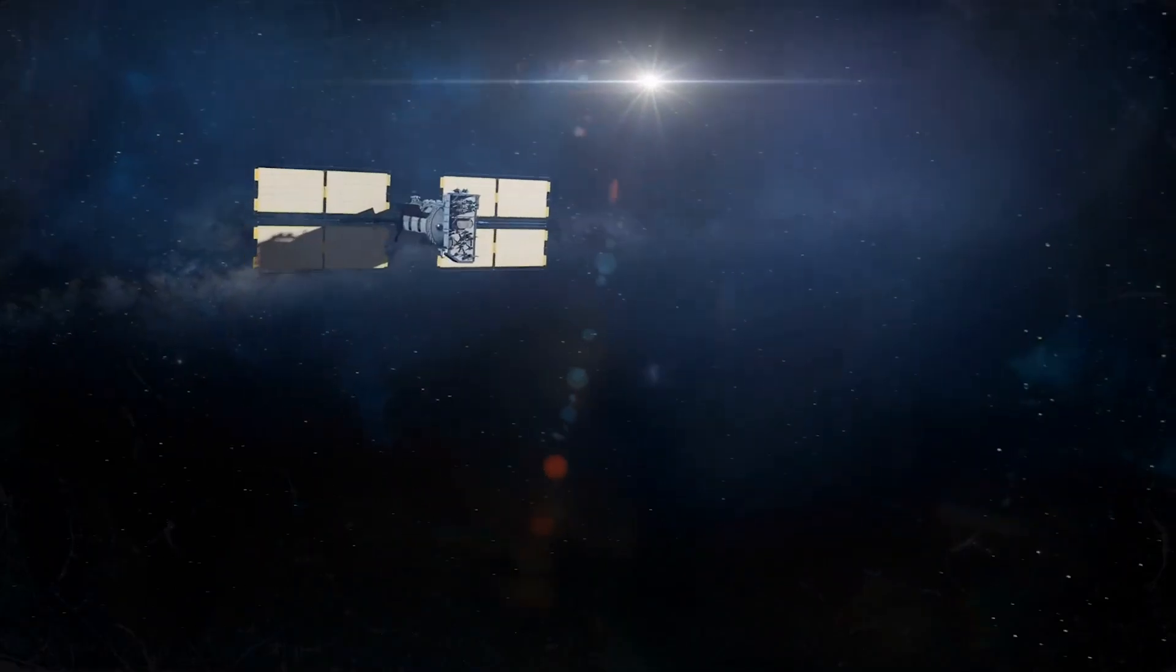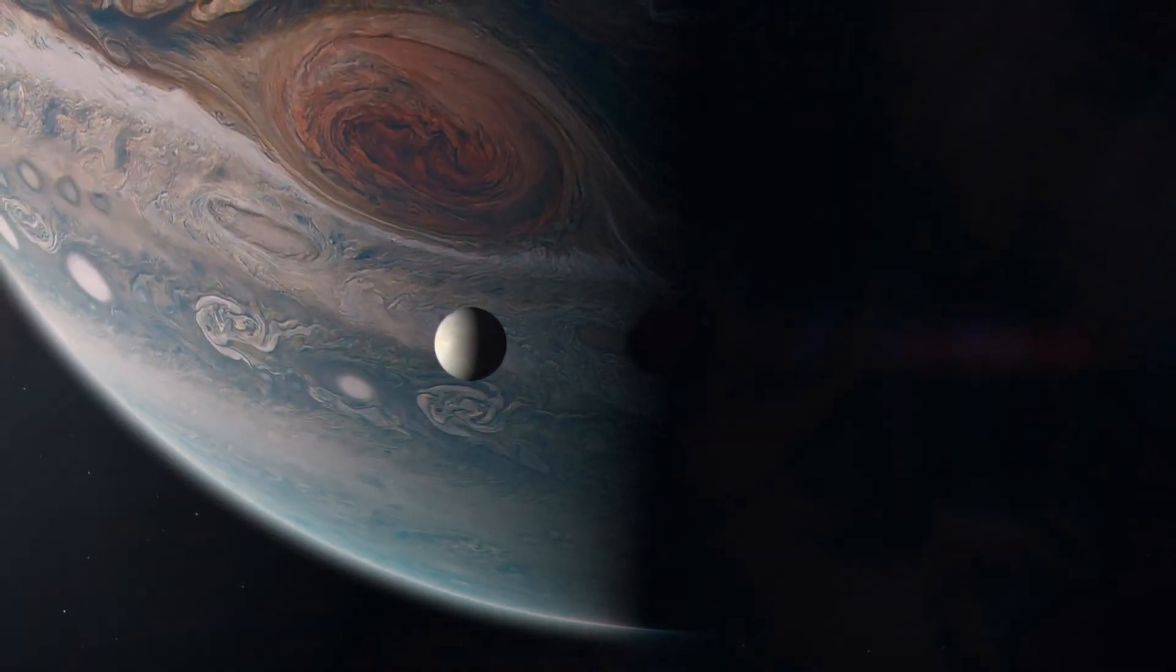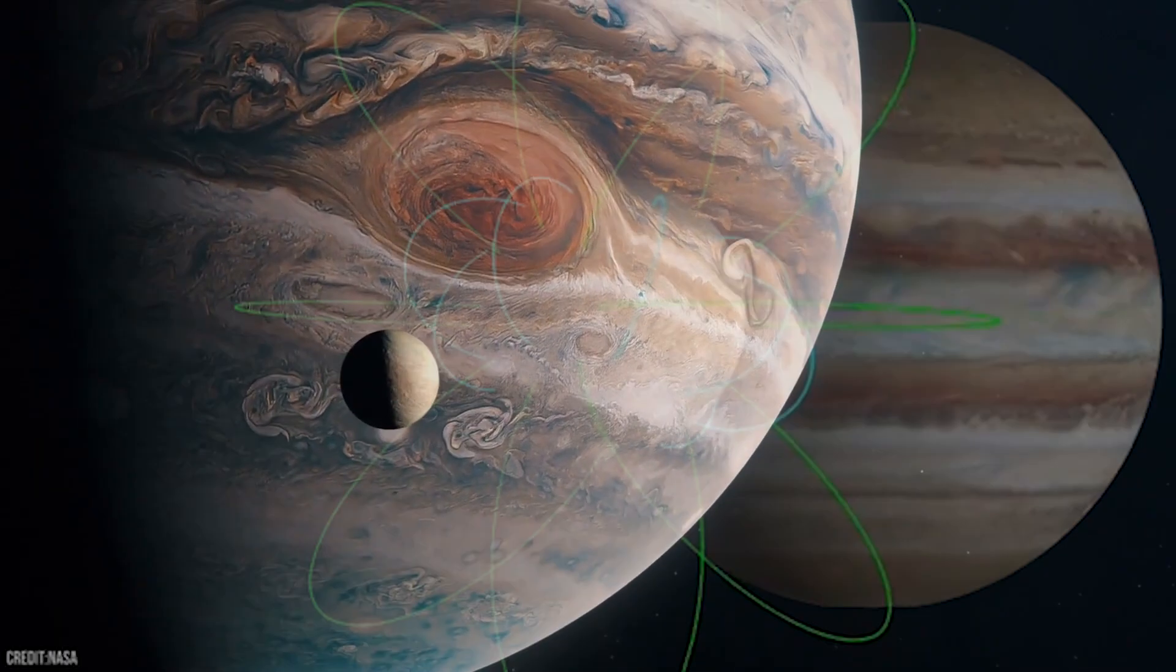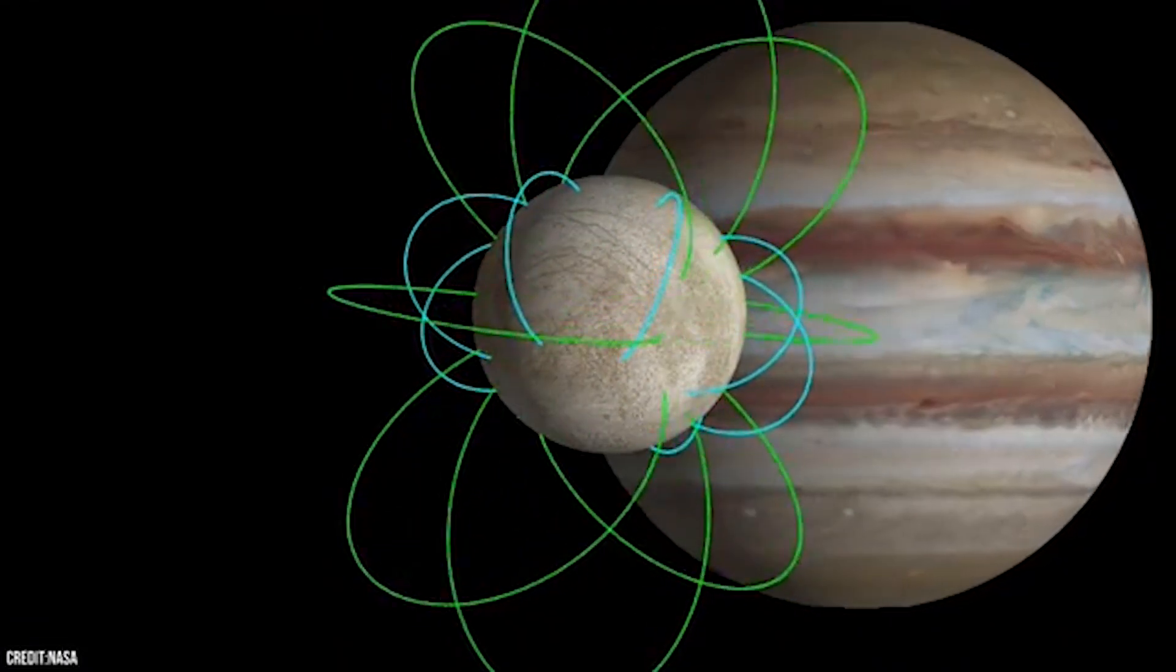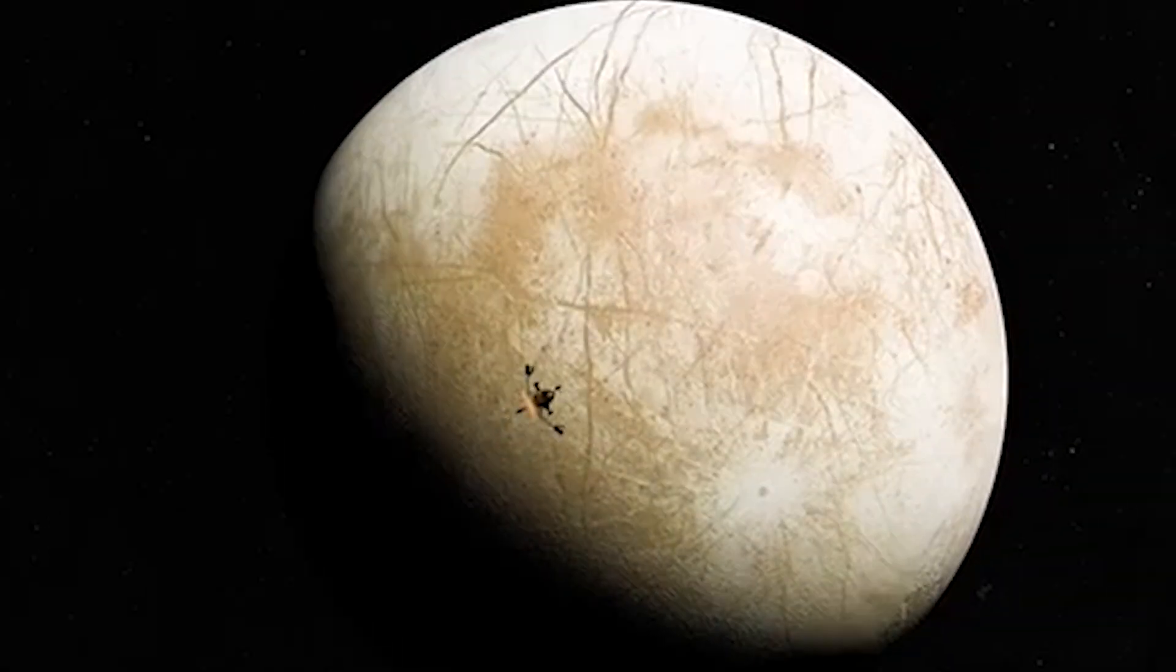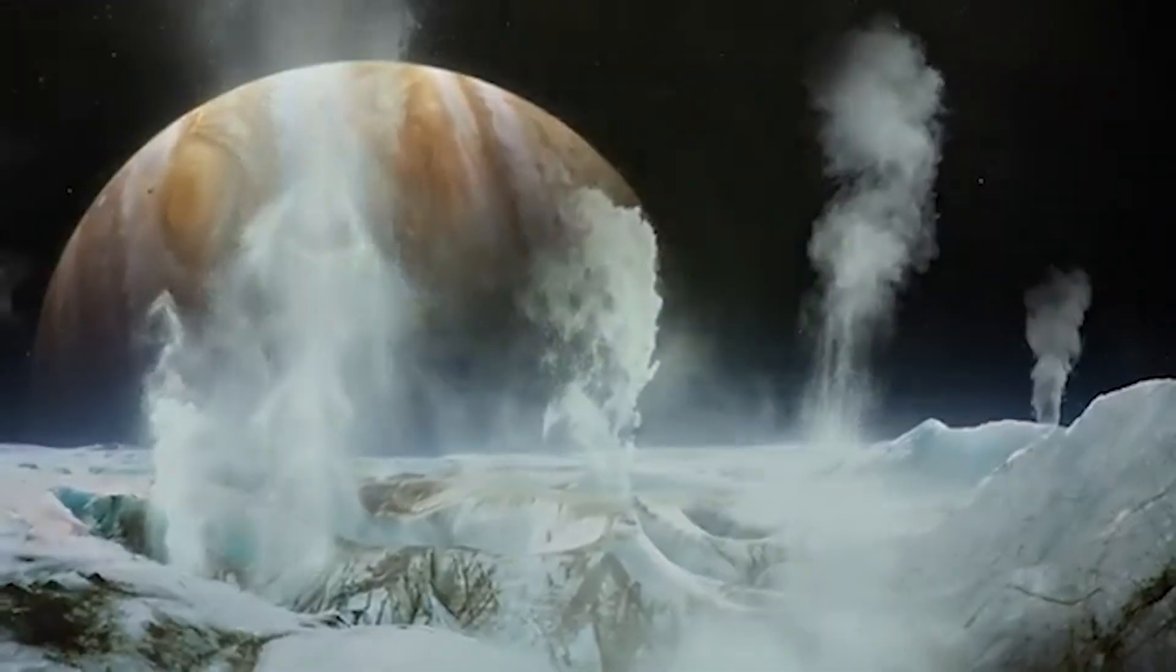But here's the twist. The mission isn't just about finding life. It's about understanding how life could exist in such a unique environment, far from our sunlit world. Europa Clipper will also investigate the moon's magnetic field, which could tell us about the ocean's depth and how salty it is, elements crucial for life. And there's this exciting possibility that the spacecraft might find signs of hydrothermal vents under the ice, places where life could thrive in the dark, just like deep-sea vents on Earth.